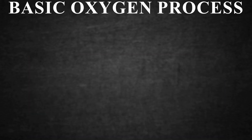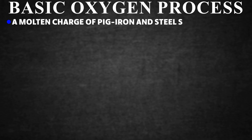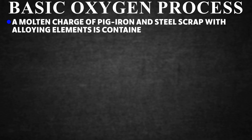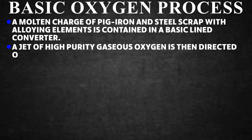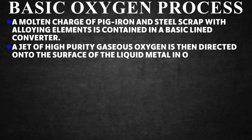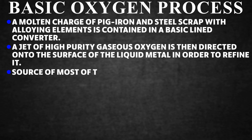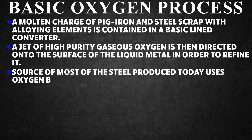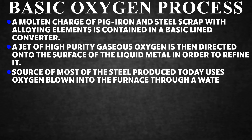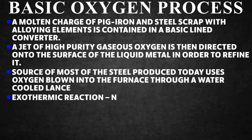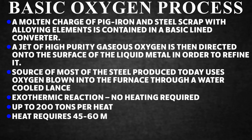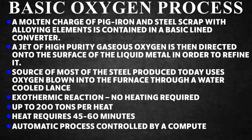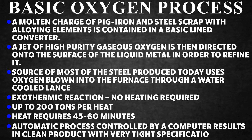Basic Oxygen Process. A molten charge of pig iron and steel scrap with alloying elements is contained in a basic-lined converter. A jet of high-purity gaseous oxygen is directed onto the surface of the liquid metal to refine it. This is the source of most of the steel produced today, with oxygen blown through a water-cooled lance. The exothermic reaction requires no external heating, handles up to 200 tons per heat, with each heat requiring 45 to 60 minutes. The automated process, controlled by computer, results in a clean product with very tight specifications.